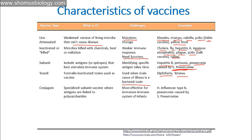Conjugate vaccines are a specialized type of subunit vaccine where antigens are linked to polysaccharides. These are most effective for immature immune systems or infants, whose immune systems are not well developed and cannot generate a strong response to a small antigen alone. Linking the antigen to polysaccharides helps generate the needed immune response. Examples include Haemophilus influenzae type b and pneumococcal vaccines.